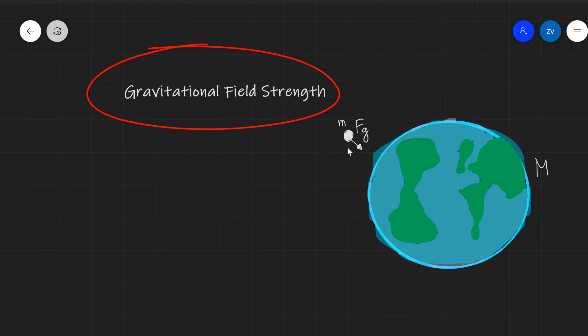Now, let's imagine that we have a little point mass over here of mass M, and we have the Earth here. This point mass will be experiencing a gravitational attractional force towards the center of the Earth, and the Earth will also be experiencing the same force.